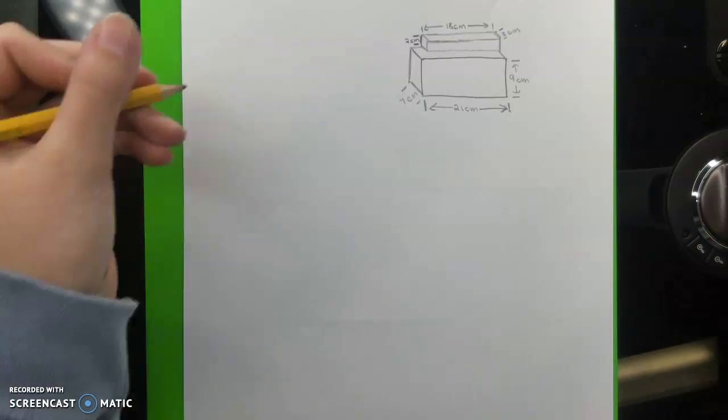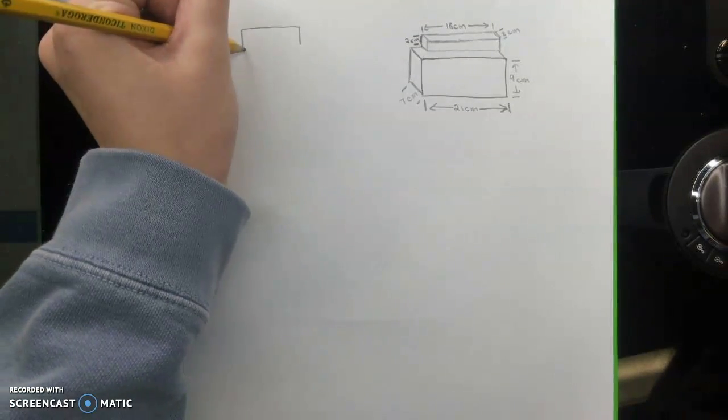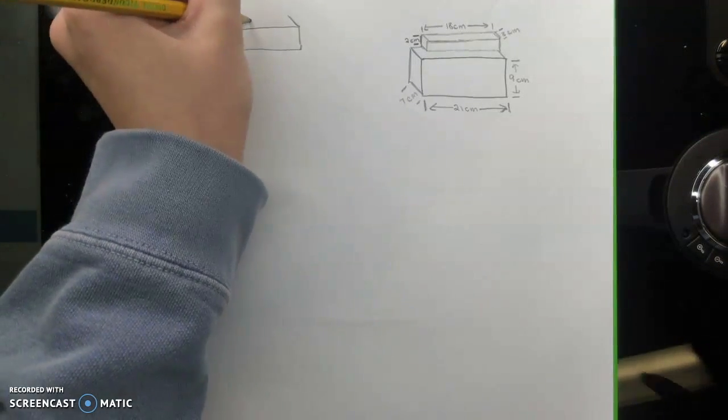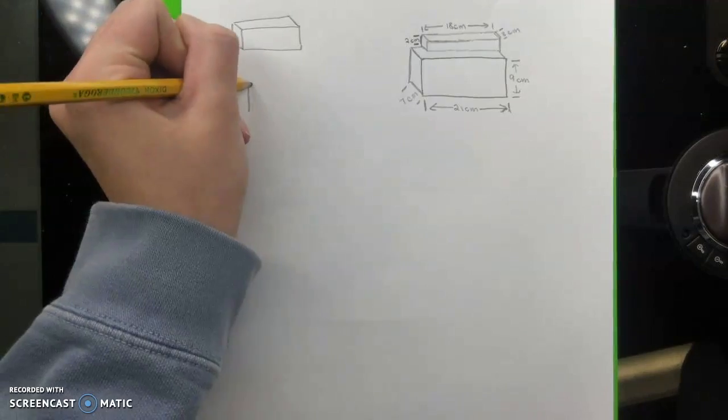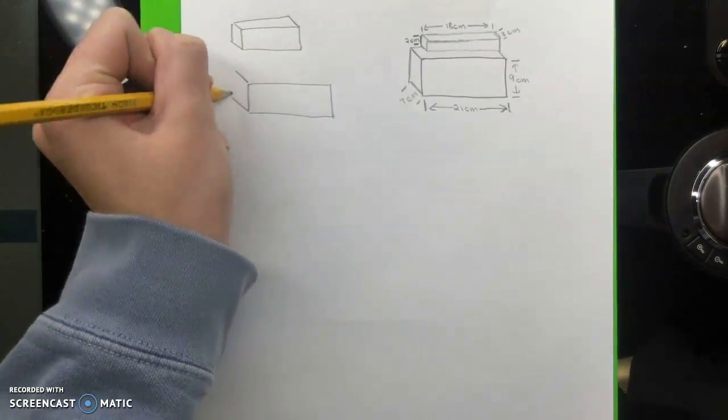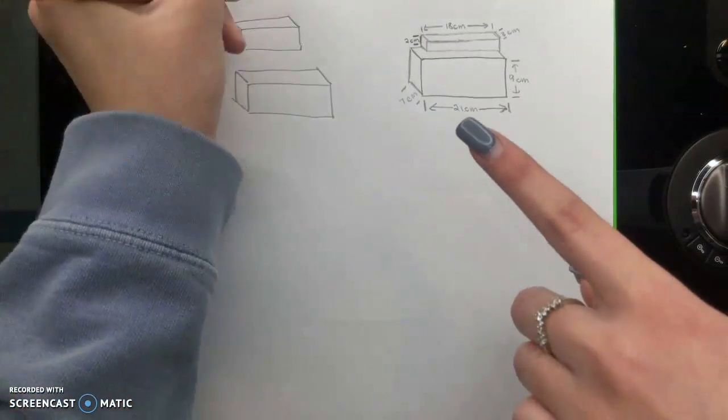So first, we separated the two boxes. Don't get too caught up in doing a 3D box like Sam is doing right now. Then you put the dimensions.